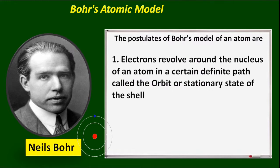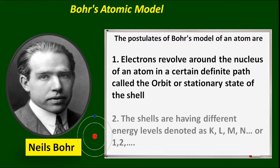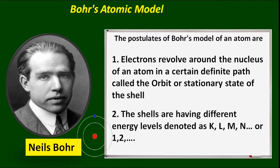Electrons revolve around the nucleus of an atom in certain definite paths called orbits or stationary states. The shells have different energy levels, denoted as K, L, M, N, or 1, 2, and so on.